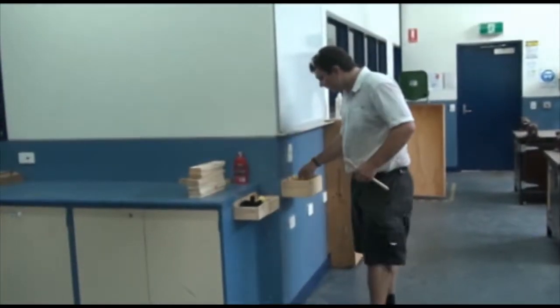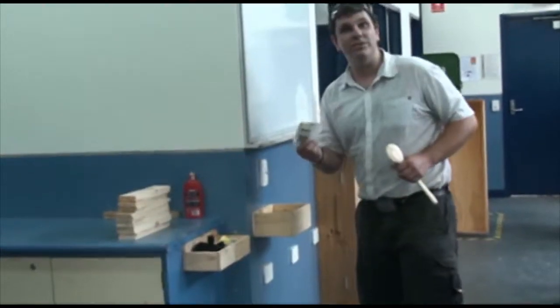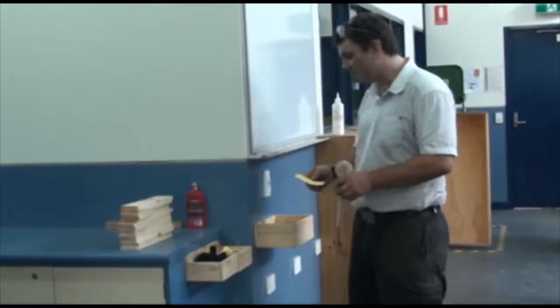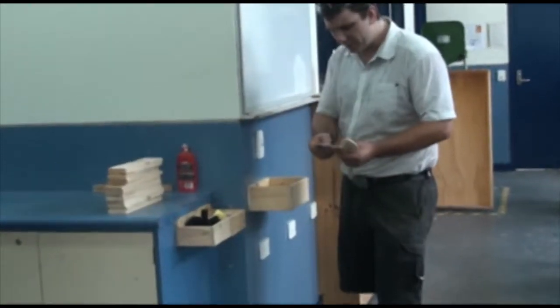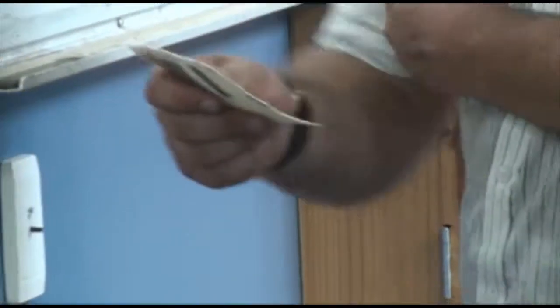When we go to sanding the spoon, we need to find some sandpaper. We should be able to find two different types in these boxes here. One type is a rough one. You can tell by the number on the back, it says P80. That means it's 80 grit, which the lower the number, the rougher it is.